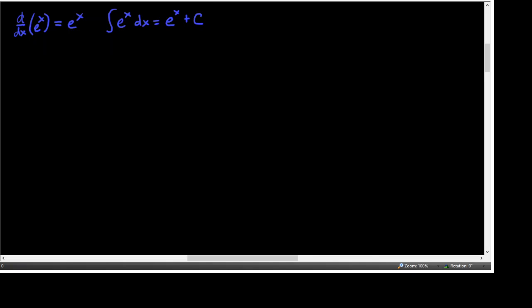So this is, of course, the base of the natural exponential function, e. This natural base can be used to assign a meaning to a general base a. Because we can define a to the x as e to the ln of a to the x, because of the inverse properties of e and ln — inverses of each other. This is one of those properties. And that x can be brought down in front of the ln, still on the exponent, to become that.